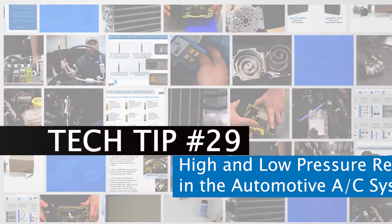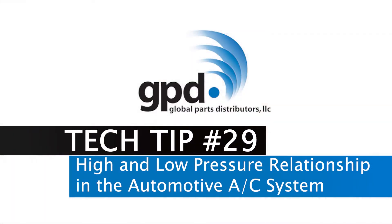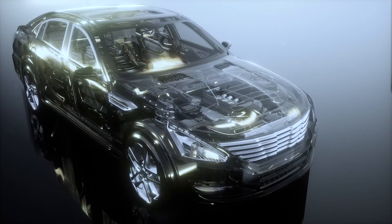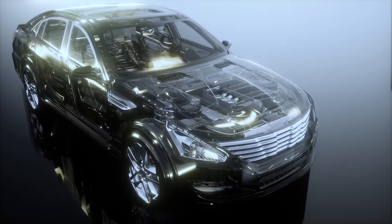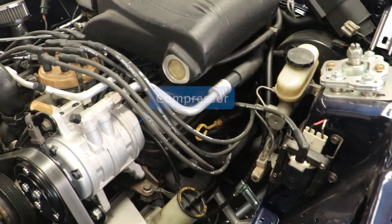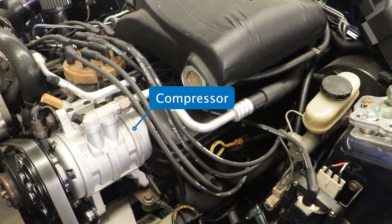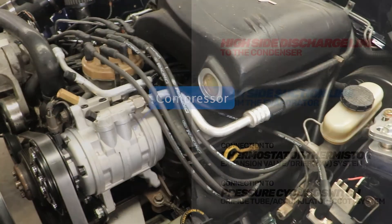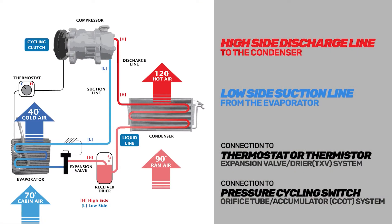This video will explain the high and low pressure relationship in the automotive AC system. In an automotive AC system, the compressor is driven by a pulley on the engine's crankshaft. The AC system is designed to create pressure changes between the evaporator, which is where heat is absorbed, and the condenser, where heat is released to cool the interior of the vehicle.